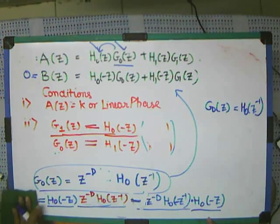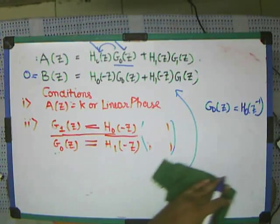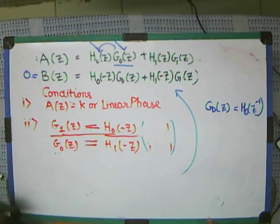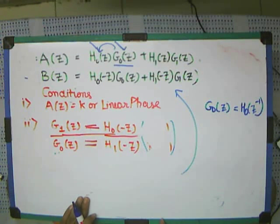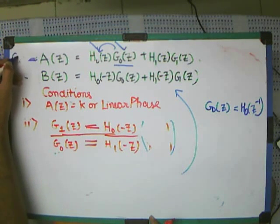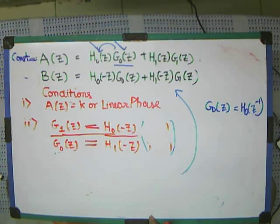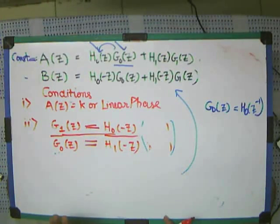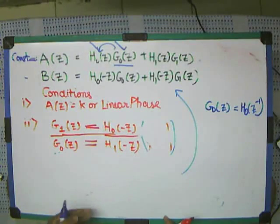There is no problem with this way of thinking. Similarly, if you see the other part, we want this to be equal to a constant. For this, what we will do is try to look at how this will be equal to a constant. First of all, if this has to be this constant, then h0(z), g0(z) — let's see how it will work.